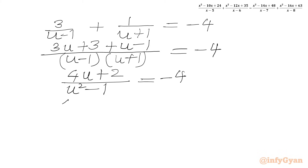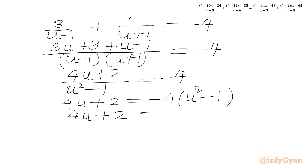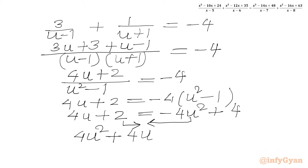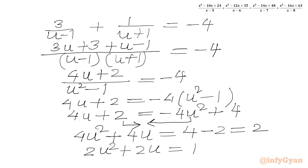Cross multiplying: 4u + 2 = -4(u² - 1), which gives 4u + 2 = -4u² + 4. Bringing -4u² to the LHS: 4u² + 4u = 4 - 2 = 2. Dividing both sides by 2: 2u² + 2u = 1. We'll solve this using completing the square rather than the quadratic formula.